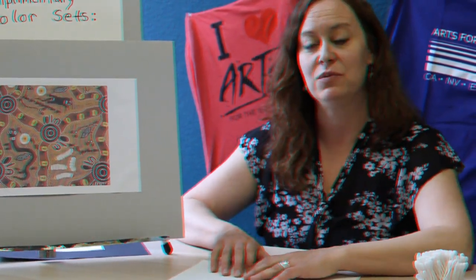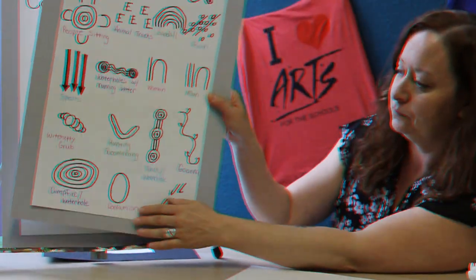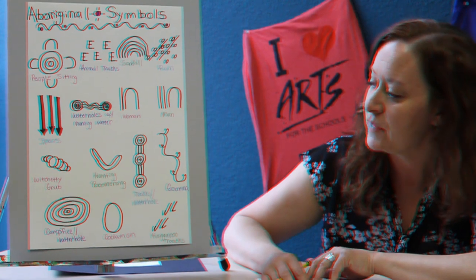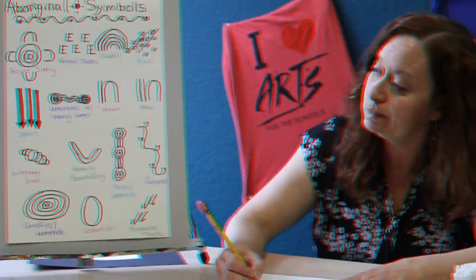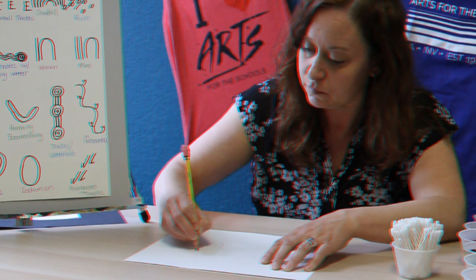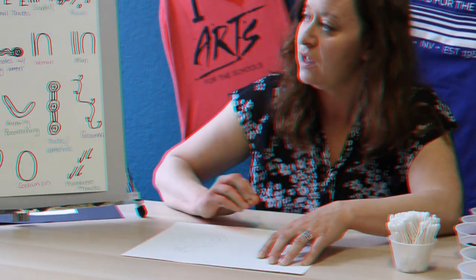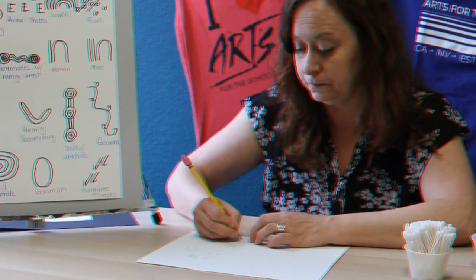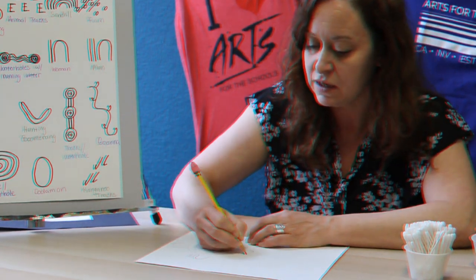Okay, so let's grab our symbol chart so that we can make our sketch. For my piece I am going to start with some men and women sitting near a campfire or water hole. It's important that you make your sketches big enough so that when you start to add the dots, you have plenty of room to do that. So I have so far one man here, one man here, and I'm going to add some women around this campfire.